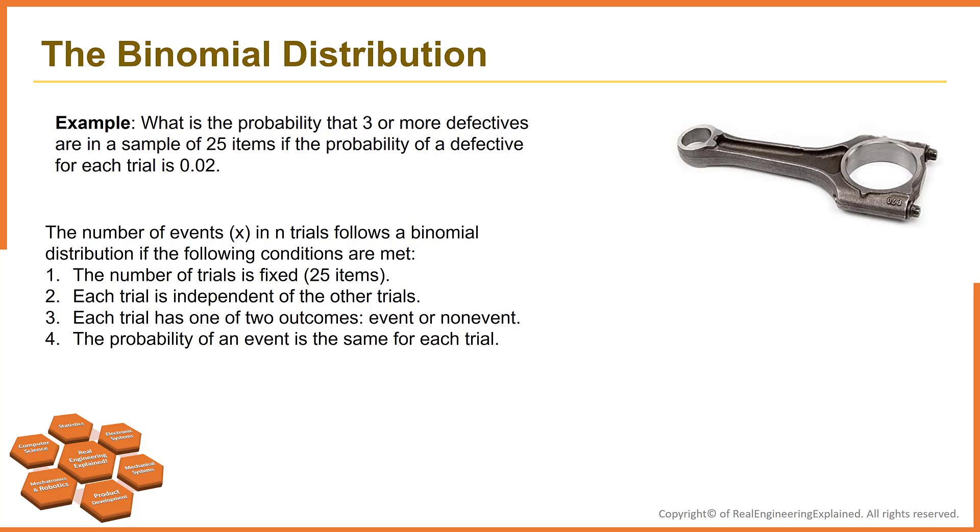Let's investigate this problem to see if we can solve this problem with binomial distribution. Does it meet the following conditions for binomial distribution? First, the number of trials is fixed. N is equal to 25. Each trial is independent of the other trials. The first defective item is independent of the second one. There is no relation.